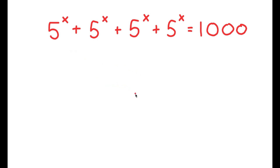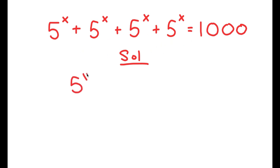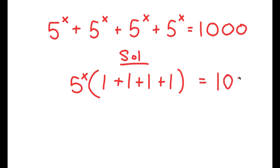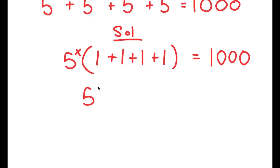Alright, so in this problem, I have 5 to the power of x plus 5 to the power of x plus 5 to the power of x plus 5 to the power of x is equal to 1,000. For my solution, I'm going to start by factoring out 5 to the power of x from my left-hand side. We have 4 of the same terms on the left-hand side, and the easiest way to solve this is to factor them out. So I get 5 to the power of x times (1 plus 1 plus 1 plus 1) is equal to 1,000.